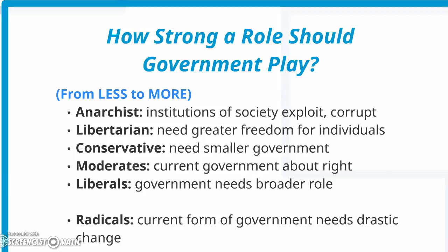Moderates would accept government as it is, as about right. Liberals may want more government regulation — for example, of Wall Street, the FDA, or agriculture — and would be in favor of broad government oversight. Radicals believe the current form of government needs to be overthrown, and there needs to be drastic change.